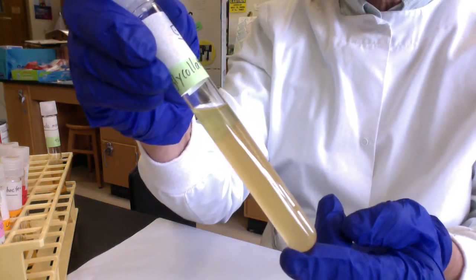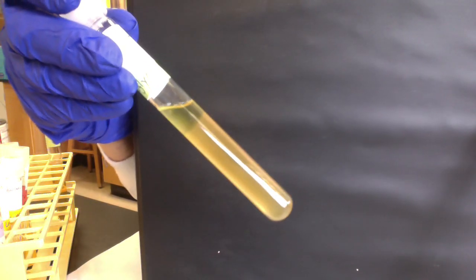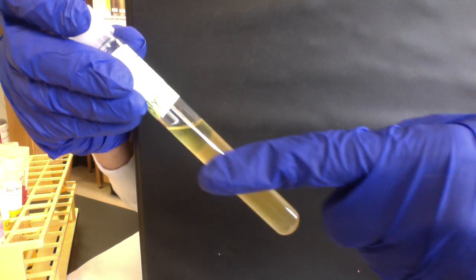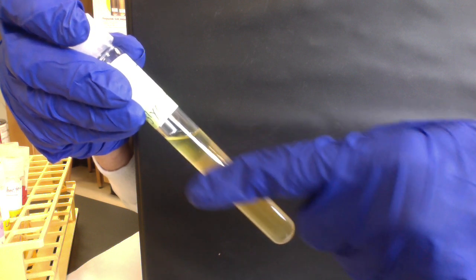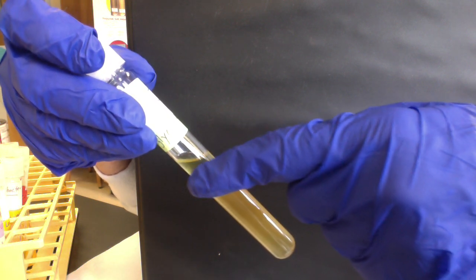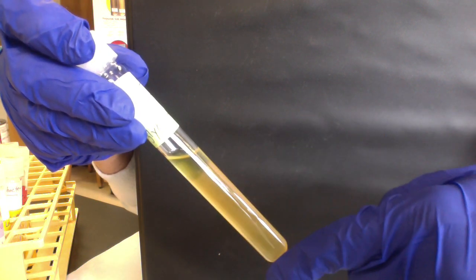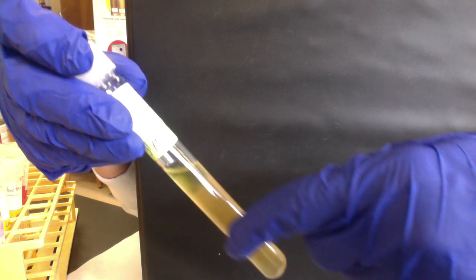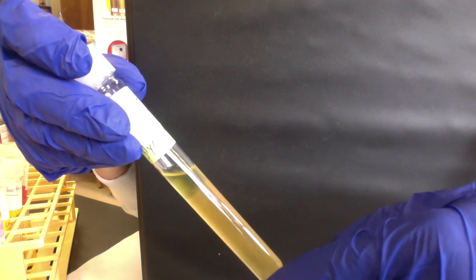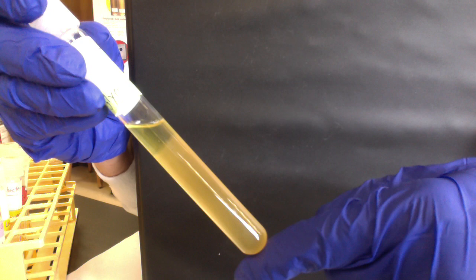We can see that E. coli is growing throughout the tube. This tells us it can grow both aerobically and anaerobically. This is positive for anaerobic growth. Can your microbe grow anaerobically? Yes, it can—positive for anaerobic growth.